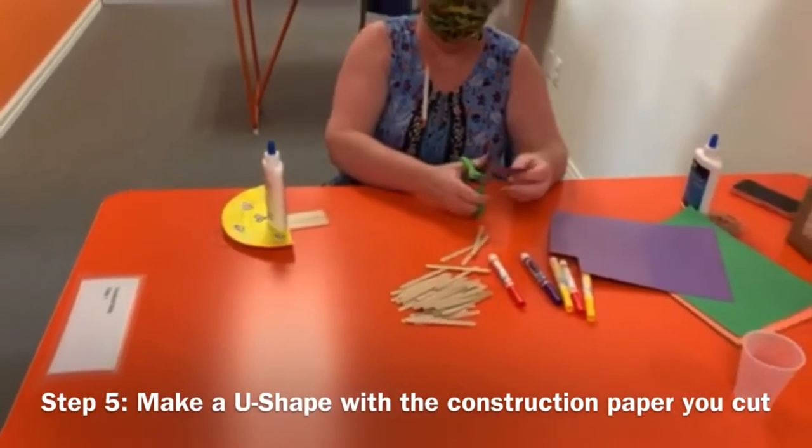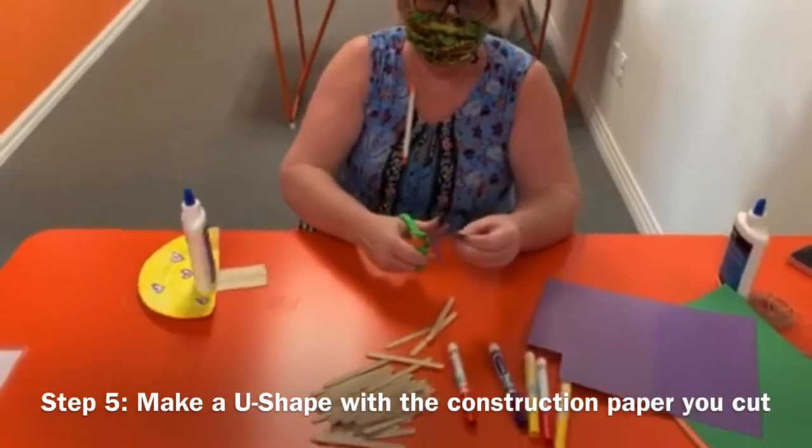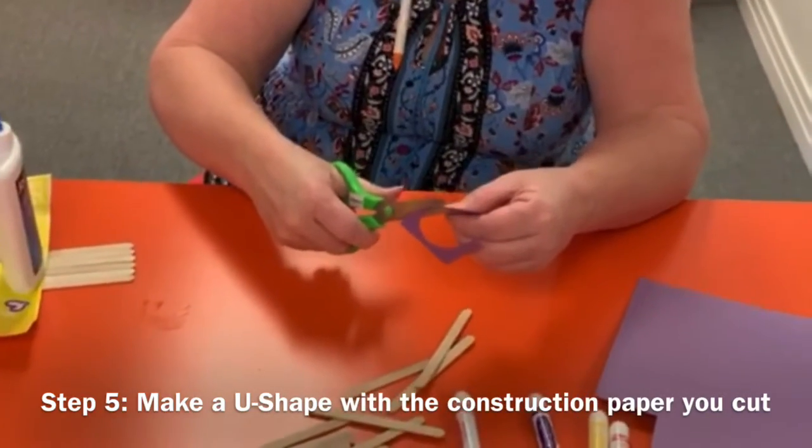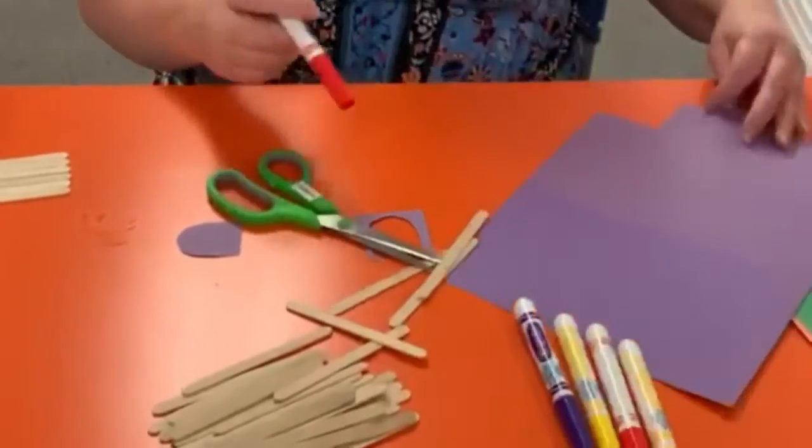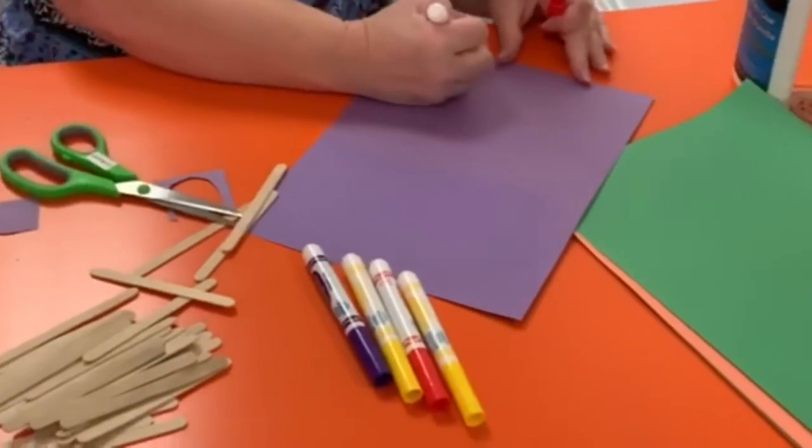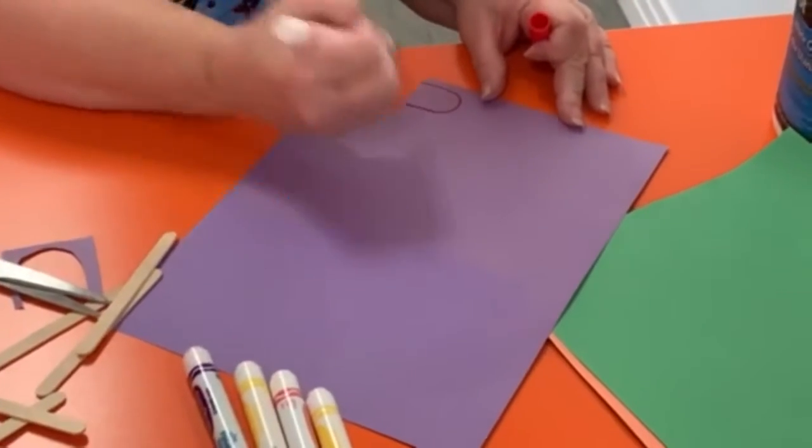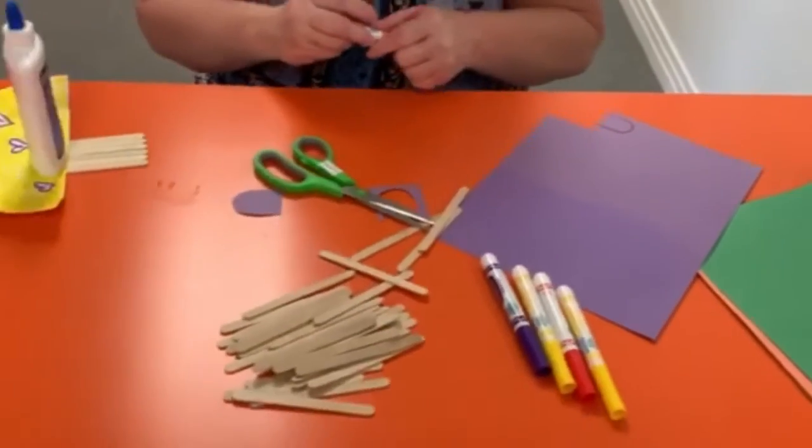And I'm just going to start here and make a nice, great, big U. Now, for some of you, it might be easier to draw that U on there first. And what you'd do if you were going to do that is you'd go ahead and just say, Oh, this is about the size, and then draw the door, and then cut along those lines. Sometimes that makes it way easier.